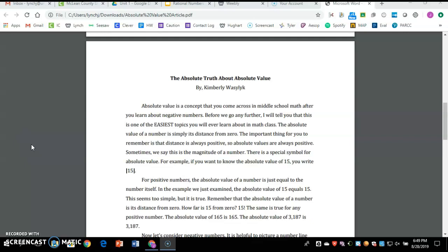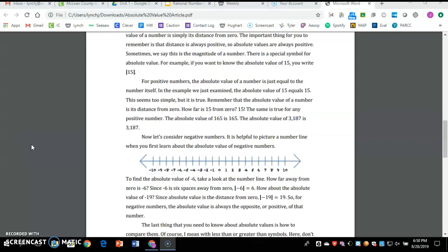There is a special symbol for absolute value. For example, if you want to know the absolute value of 15, you write it with lines around it: |15|, that stands for absolute value. For positive numbers, the absolute value of a number is just equal to the number itself. In the example we just examined, the absolute value of 15 equals 15. That seems too simple, but it is true.